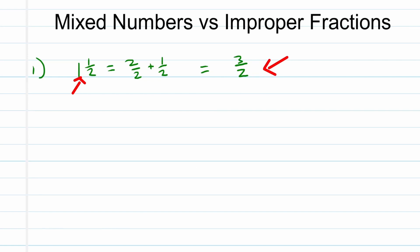Let's look at the second example. In this case, I would like to work from an improper fraction to a mixed number. Let's say we have 11 over 6. We would like to split this numerator into whatever the value of the denominator is, plus another number.